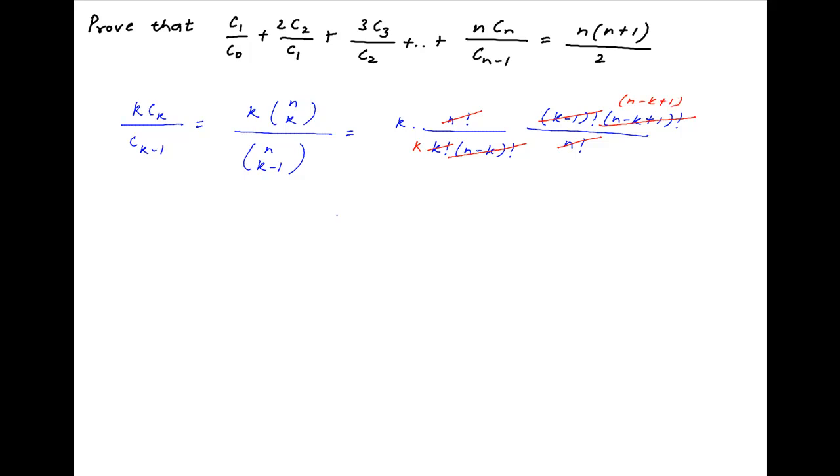Some of the other terms simplify and we are left with k times n minus k plus 1 upon k, which is equal to n minus k plus 1. Now putting k is equal to 1, the first term of